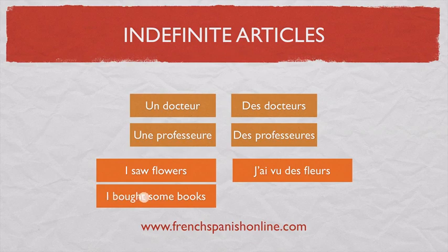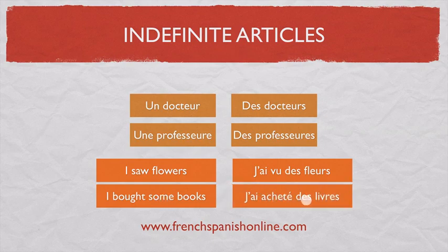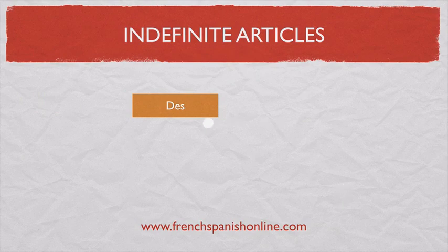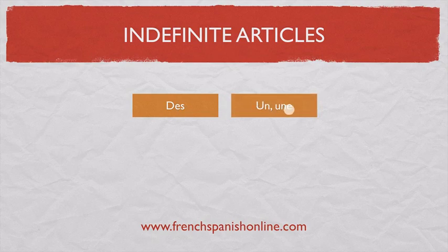'I bought some books.' We also use the plural 'des' to translate 'some' in French. So whether you say 'I bought books' or 'I bought some books', in French it's 'J'ai acheté des livres.' So 'des' is the indefinite article, plural of 'un' or 'une'.